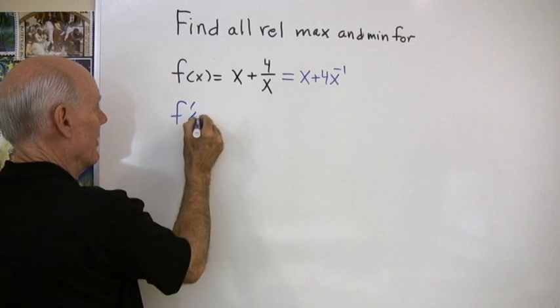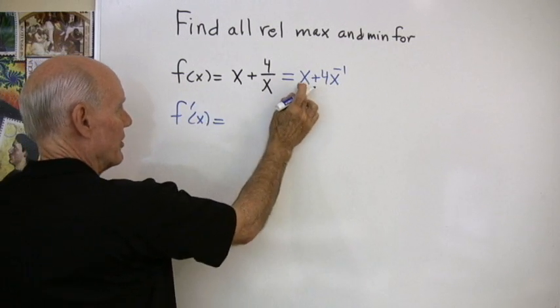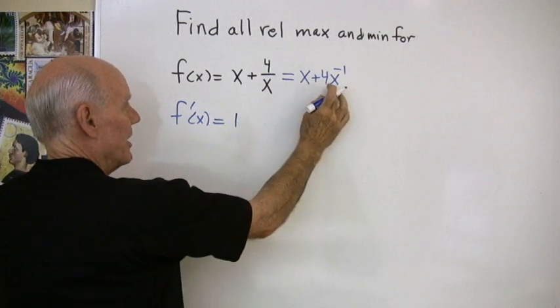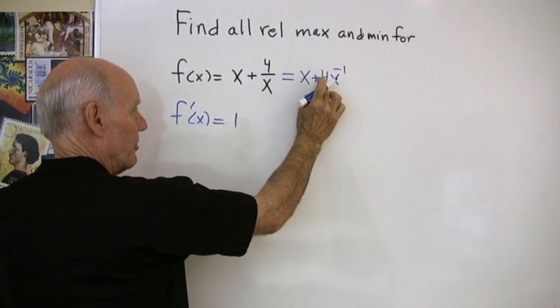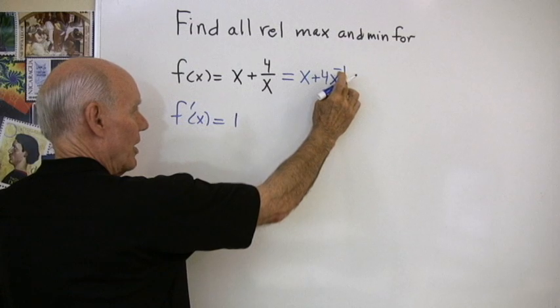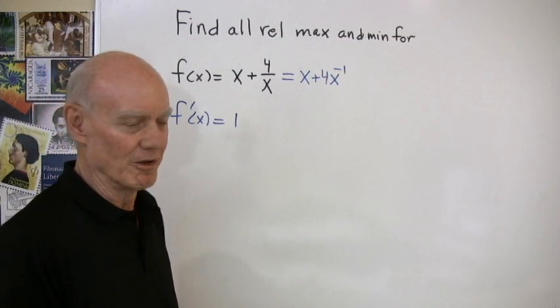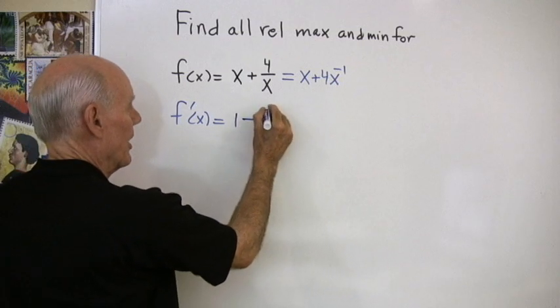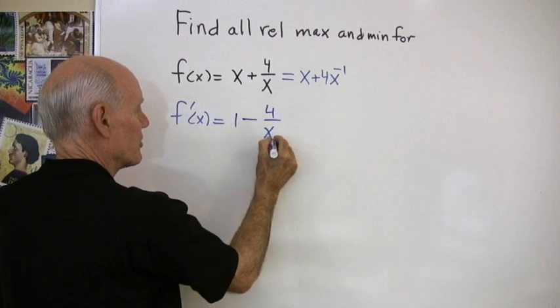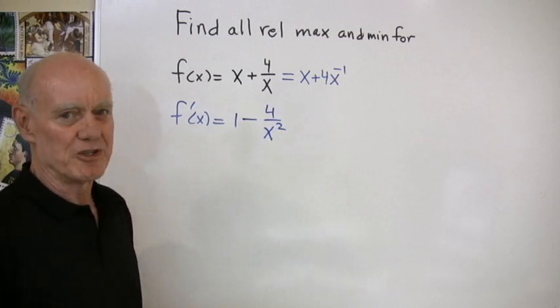f prime of x, I'm going to get the derivative of x, which is 1. Here I'm going to take negative 1, multiply it by 4, and get negative 4, and then subtract 1 from that exponent to get x to the negative 2. That's going to give me 1 minus 4 over x squared. So there's my first derivative.